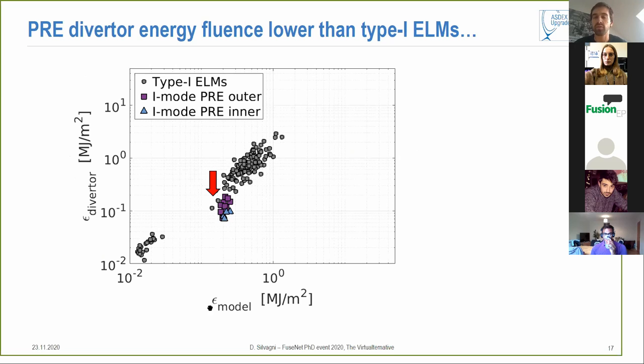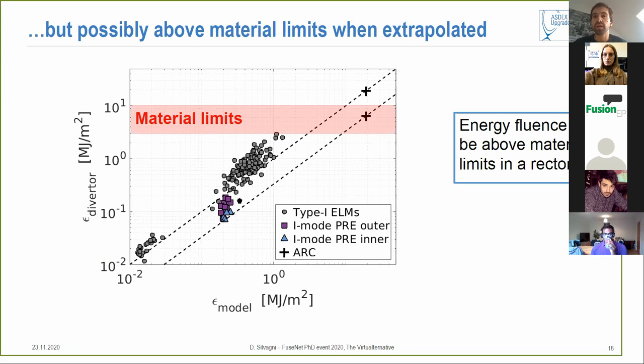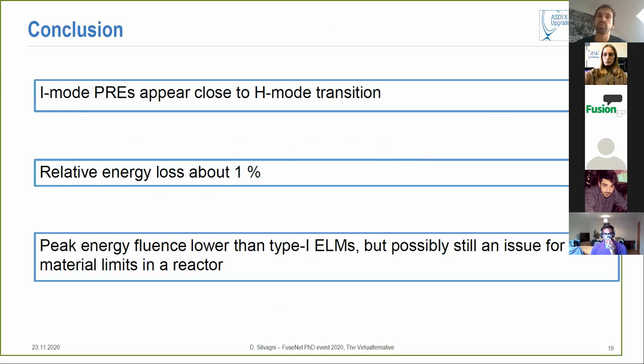Now if you plot the data, so here you have on the y-axis the measured data on the divertor and on the x-axis the model, you see that the PRE energy fluence is lower than that of type-1 ELMs that you see here in light gray. So in this respect there's a lower effect on the divertor. However if we then do some extrapolations we can use these upper and lower boundary lines to make some projections for example to ARC which is a DEMO-like reactor that is thought to be built in the US. You can see that it could be possibly above the material limits even if they are lower than type-1 ELMs.